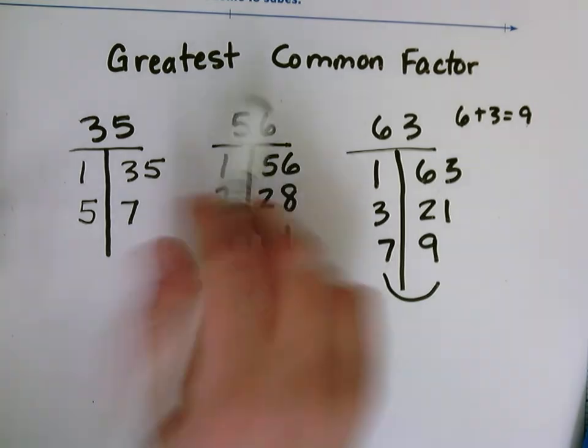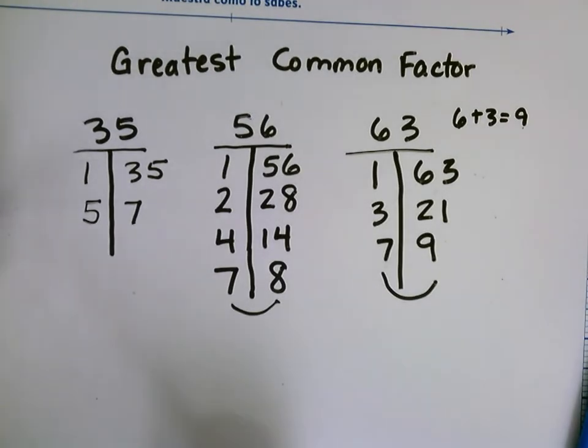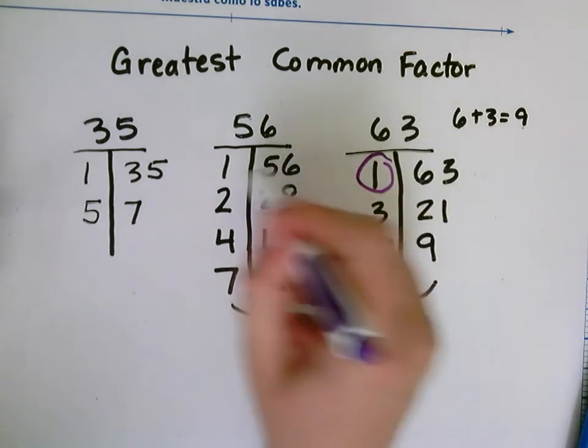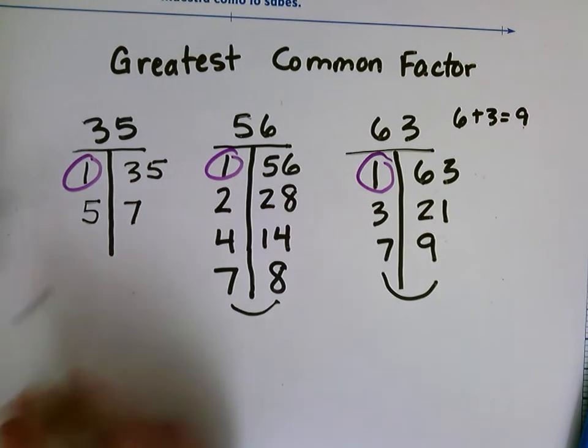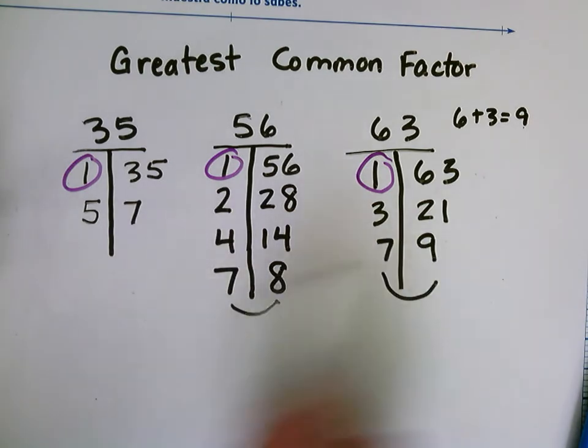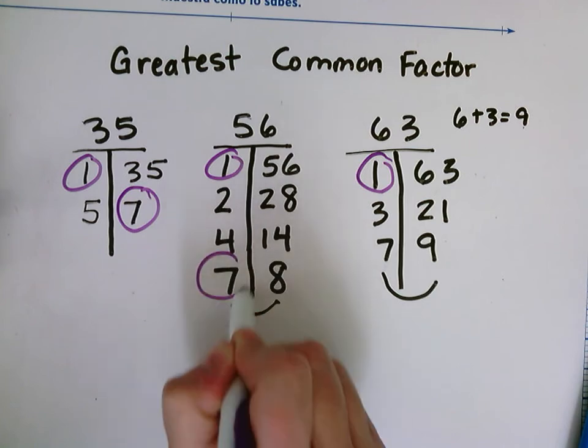Now I'm going to find my greatest common factors. I'm going to look at each list and see what numbers they have in common. Well, I see they all have a 1 as every number shares 1 as a common factor. No 5s in the other lists, but I do see a 7 and a 7 and a 7.